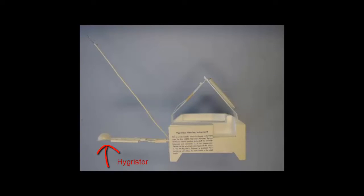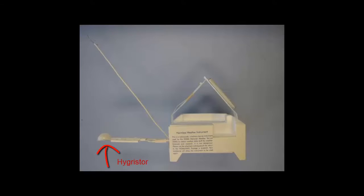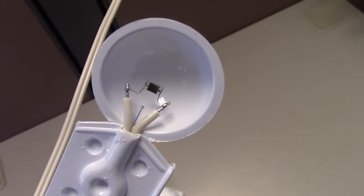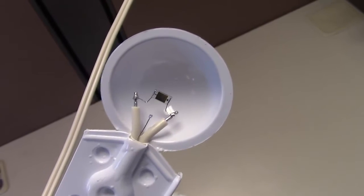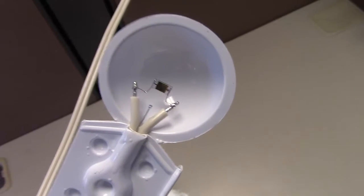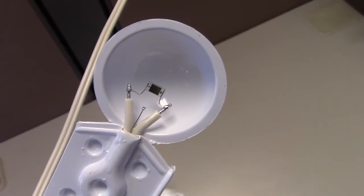The sensor on the left side of the radiosonde is called a hygrister, which measures relative humidity. This is done with a plastic piece that is coated with a celluloid resin and dried. This celluloid is sensitive to changes in humidity and the value is measured based on how much the sensor expands or contracts with the changing water vapor.